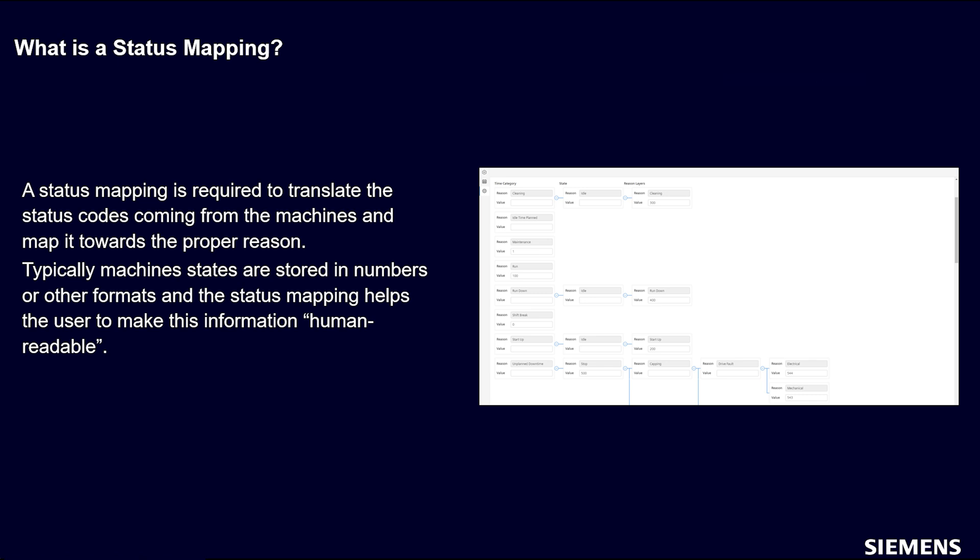As the name indicates, status codes are mapped against reasons. A reason tree can have more reasons than status codes, so it is not necessary to map a status code against every reason in the tree. Usually, users add codes to the leaves of the tree structure, because the last reason layer then also covers the other reason layers before it. Let's have a closer look at an example status mapping based on the previously shown reason tree.